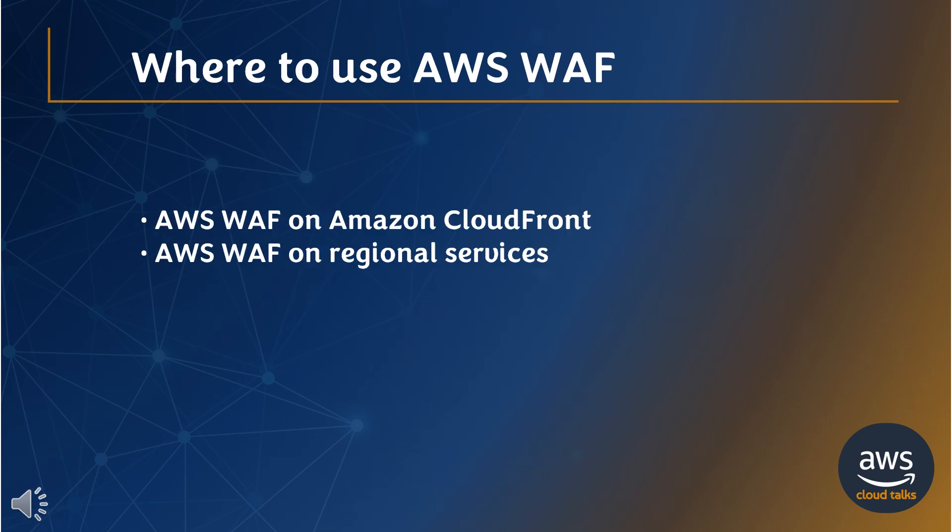When you use AWS WAF on Amazon CloudFront, your rules run in all AWS edge locations located around the world, close to your end users. This means security doesn't come at the expense of performance, and blocked requests are stopped before they reach your web servers. When you use AWS WAF on regional services such as Application Load Balancer, Amazon API Gateway, and AWS AppSync, your rules run in region and can protect both Internet-facing and internal resources.